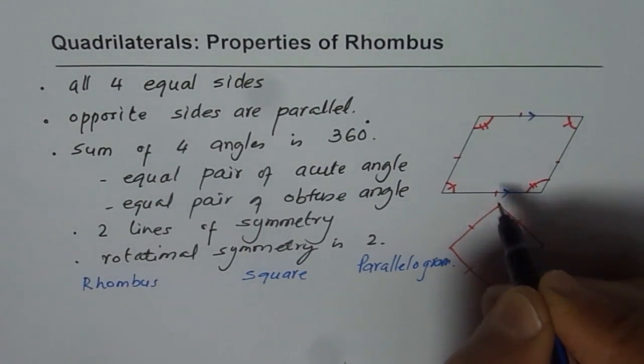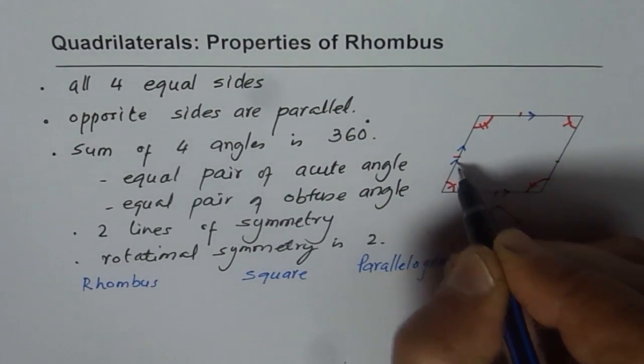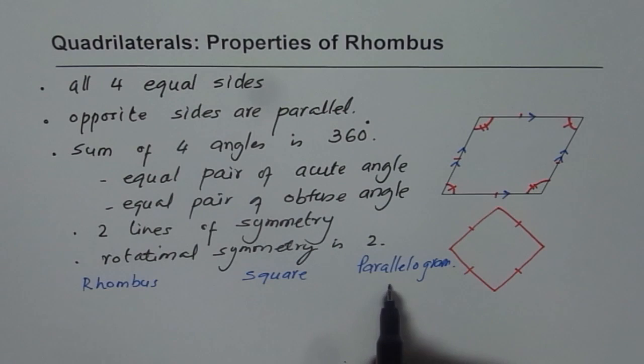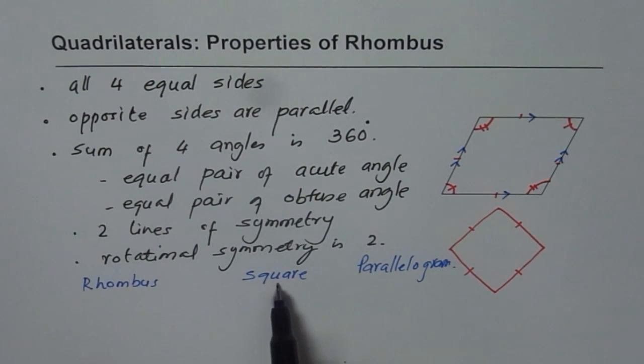So rhombus is a parallelogram, but every parallelogram will not be a rhombus. That is kind of important to understand, just as square is a rectangle but every rectangle will not be a square. I hope that helps you to understand a lot about rhombus. Thank you.